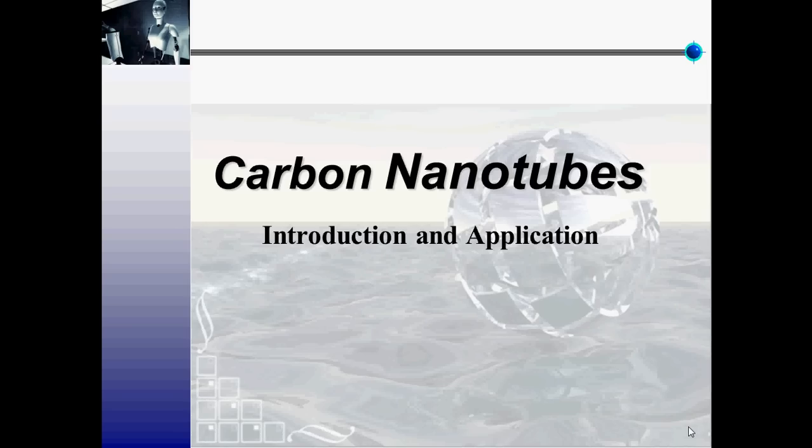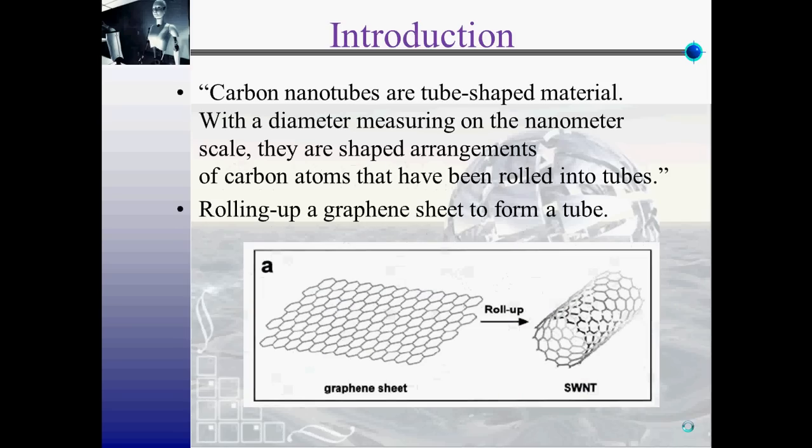Carbon nanotubes. What is a carbon nanotube? Carbon nanotubes are tube-shaped materials with a diameter measuring on the nanometer scale.